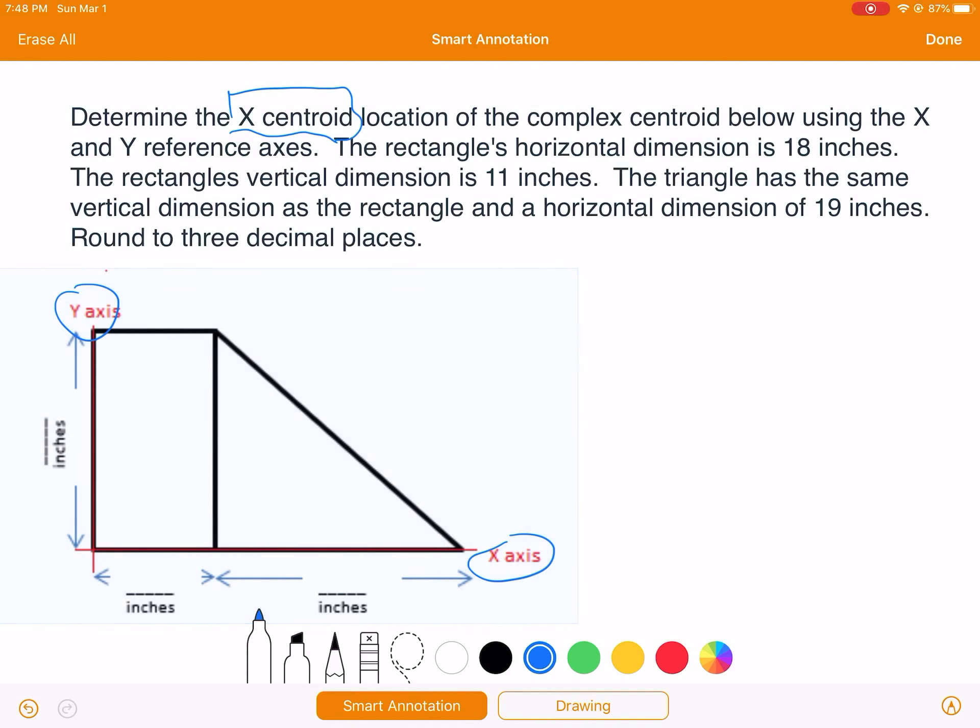The rectangle horizontal dimension is 18 inches, so that's this one, and the rectangle's vertical is 11 inches, so that's that one. The triangle has the same vertical dimension which is 11 inches and a horizontal dimension of 19 inches.